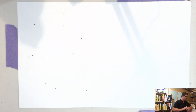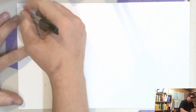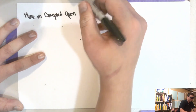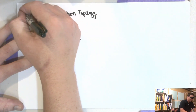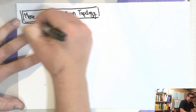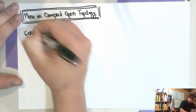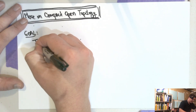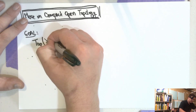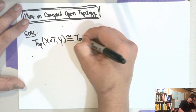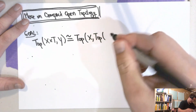We're going back to the compact-open topology. In this video, I'm going to prove that the compact-open topology on the mapping space — so Top(X,Y), with X cross T to Y — is homeomorphic to Top(T, Top(X,Y)).